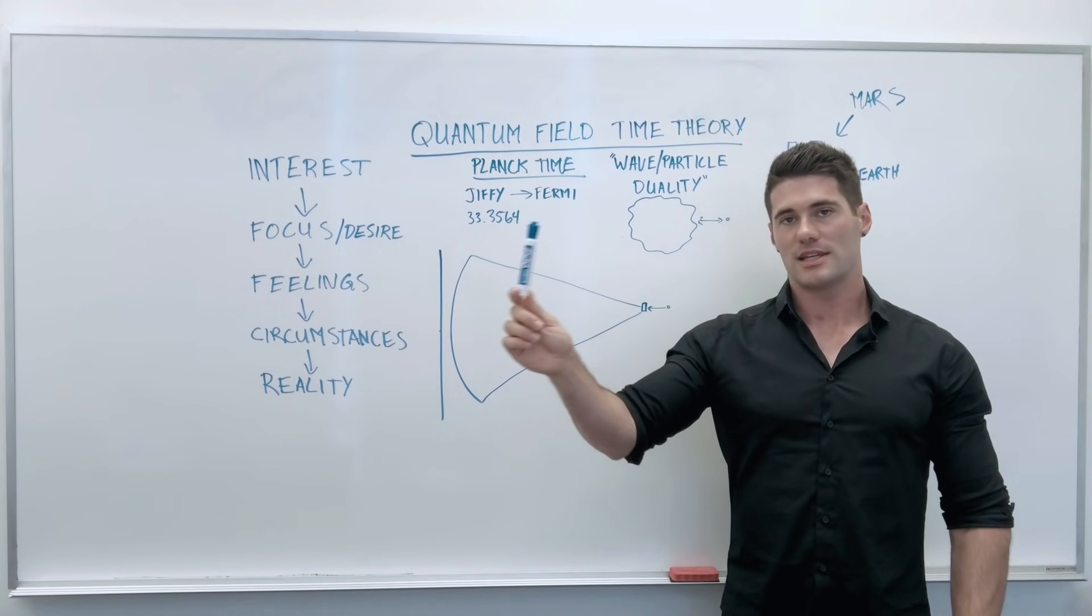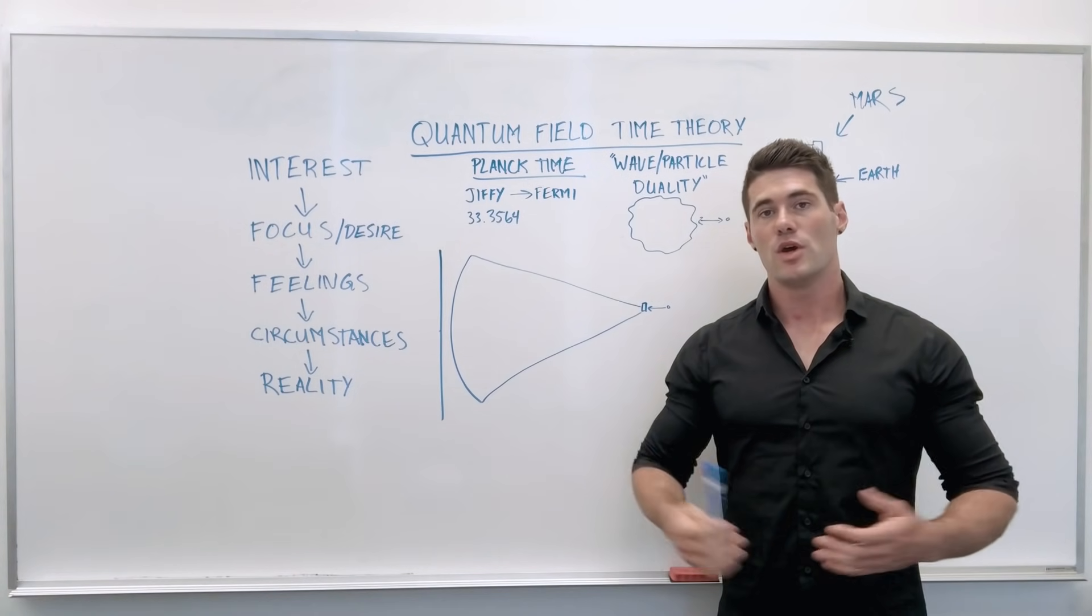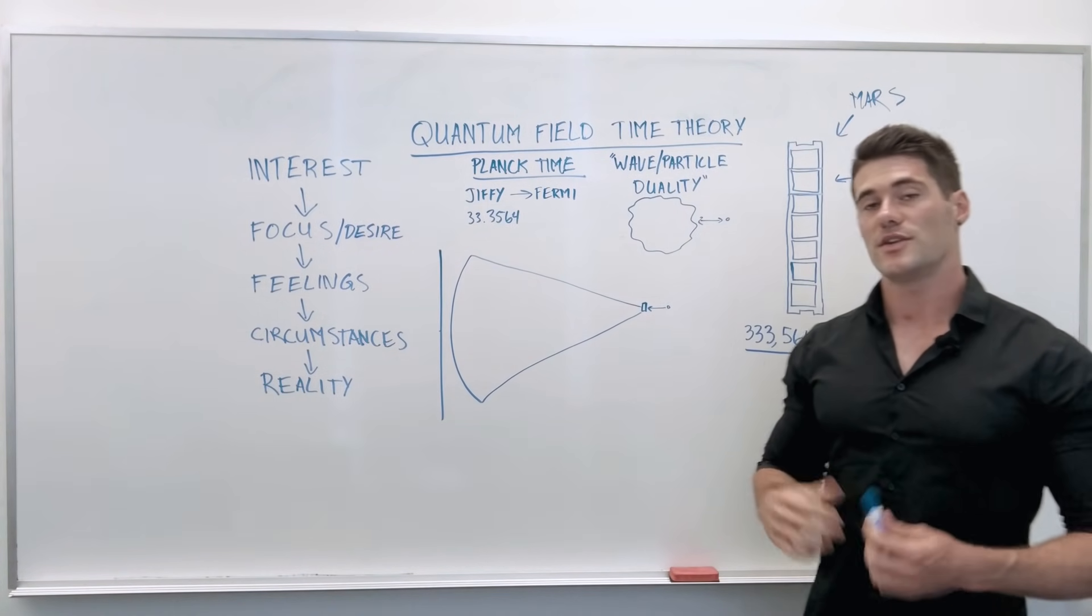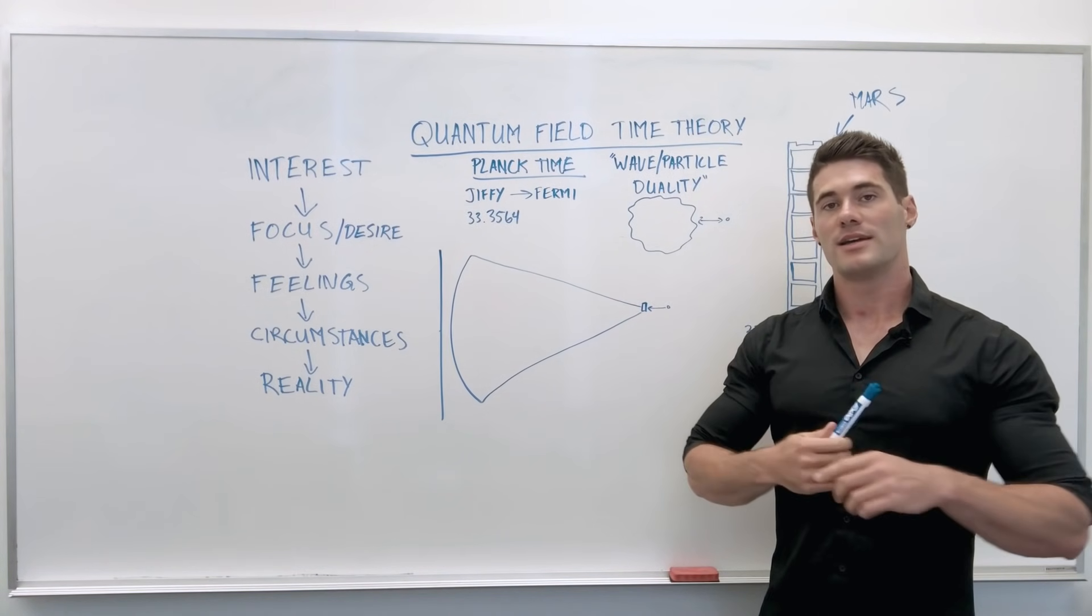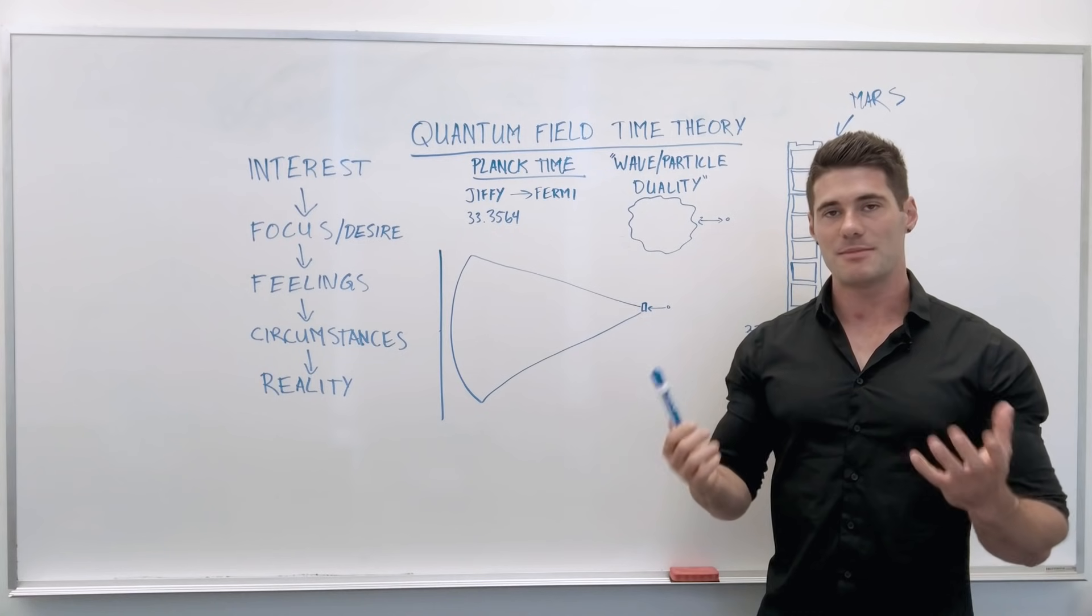All possible realities are happening at the same time, but motion gives rise to the sense of time. Moving through space gives rise to the sense of time, which is what Albert Einstein said in his theory of relativity, that time and space are actually one in the same thing called space-time.